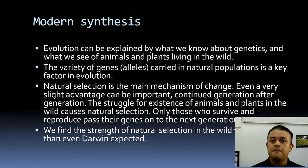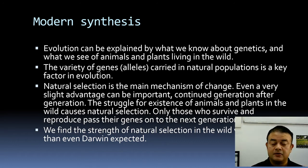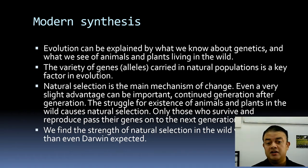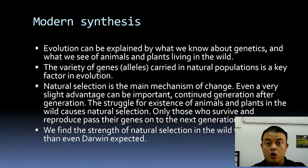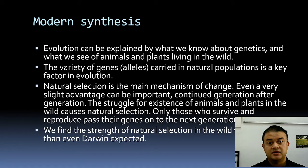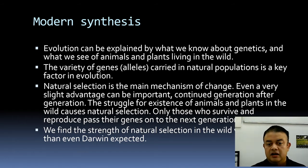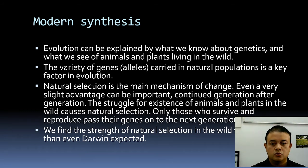Natural selection is the main mechanism of change as per modern synthesis. After modern synthesis, neutral theory of evolution proposed that drift — a chance phenomenon — is the main mechanism, not natural selection. But as per modern synthesis, natural selection is primary. Even a very slight advantage can be important: a small frequency of an allele can, in theory, become fixed in the population given sufficient time if it renders some fitness advantage. The struggle for existence in the wild drives natural selection.